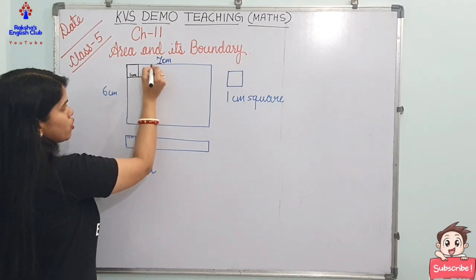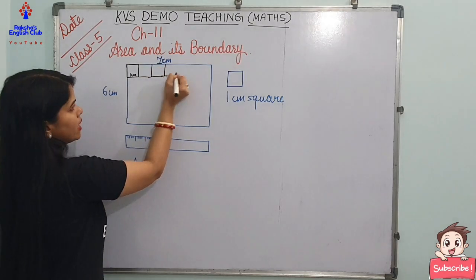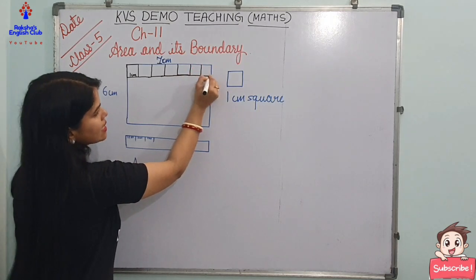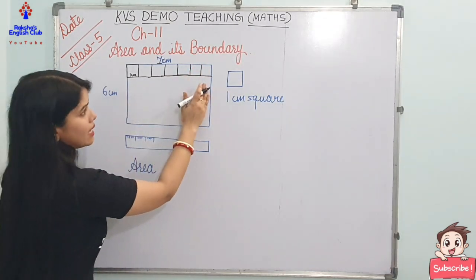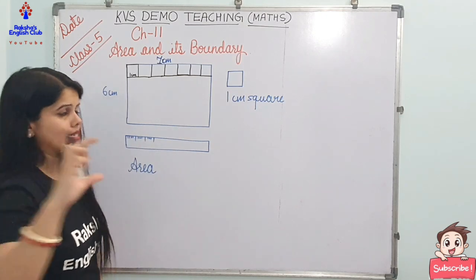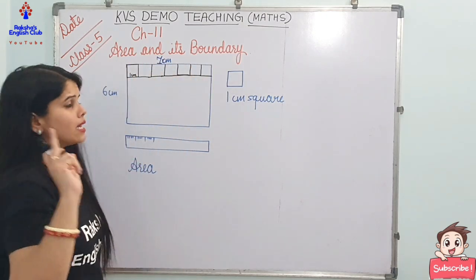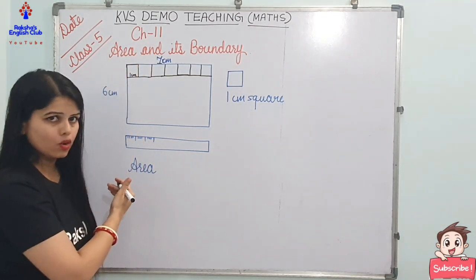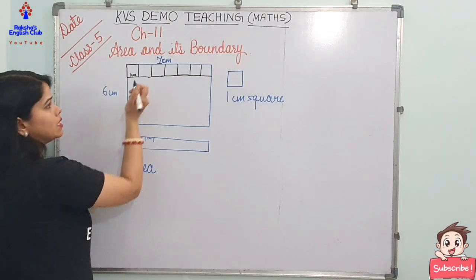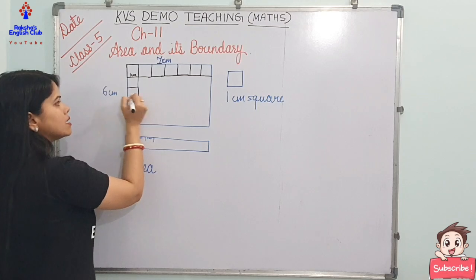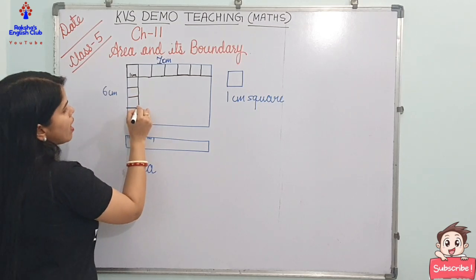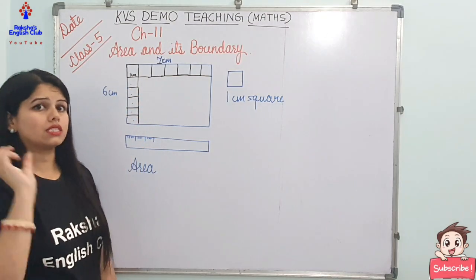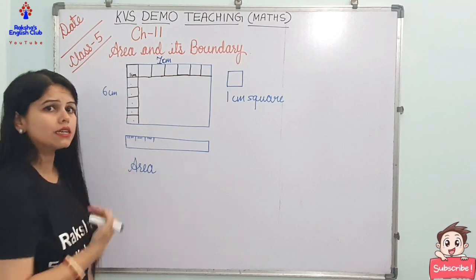How many squares can I arrange here? Because this rectangle is seven centimeters, I can arrange one, two, three, four, five, six, seven square pieces along the length. Then I want to arrange the same square pieces along the breadth of this rectangle — since it is six centimeters, I can arrange six square pieces along its breadth also.